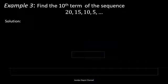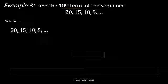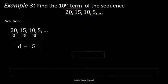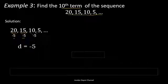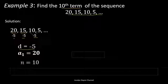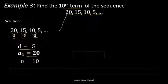Now let's consider the third example: find the 10th term of the sequence 20, 15, 10, 5, and so on. First, we solve for the common difference: 15 minus 20 equals negative 5, 10 minus 15 is also negative 5, and 5 minus 10 is also negative 5. So the common difference is negative 5. The first term is 20.